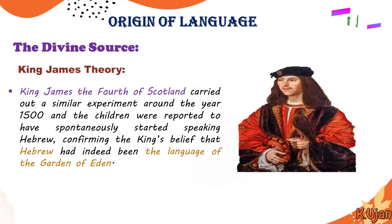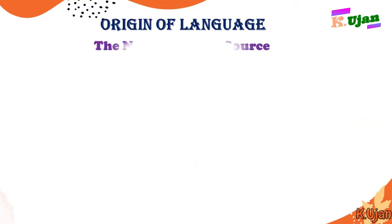Here is another divine source: the King James theory. King James the Fourth of Scotland carried out a similar experiment around the year 1500, and the children were reported to have spontaneously started speaking Hebrew, confirming the king's belief that Hebrew had indeed been the language of the Garden of Eden. This might be a biased theory because King James concluded with the same experiment that language is actually Hebrew.